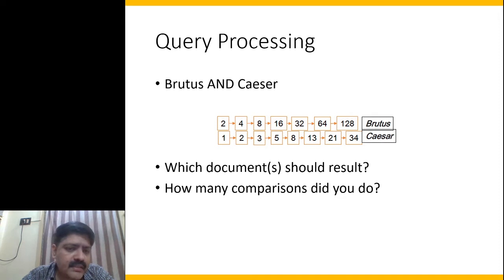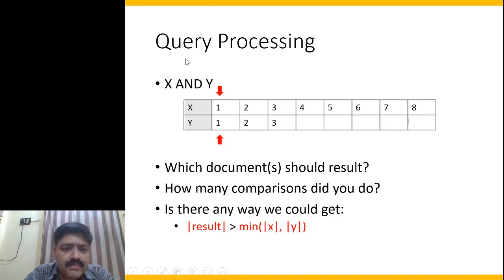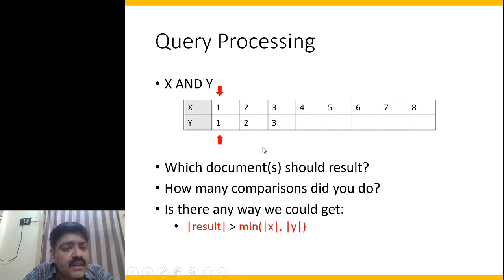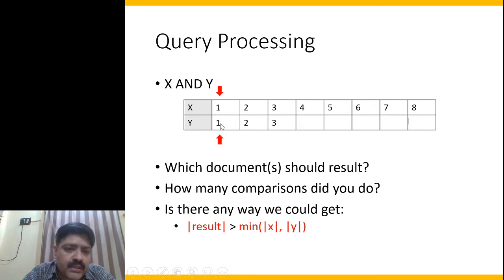How do we arrive at this answer? One way to intersect these lists and find common elements is to use the two-pointer approach. Given posting lists X and Y, we have two pointers and keep moving them, comparing the elements underneath. If they are the same, we add them to the results list and move both pointers. If they are not the same, we move the pointer pointing to the smaller number. In this example, both pointers start at document ID 1, which contains both X and Y, so we add 1 to our results.